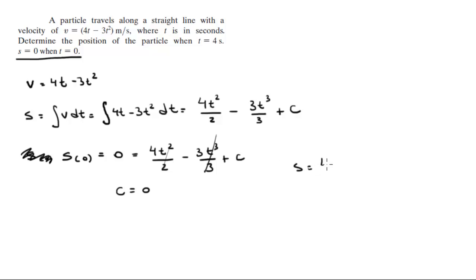So the formula for the position is 4t² over 2 minus 3t³ over 3 plus 0. Now that we have it, we can find the position at t equals 4 seconds.